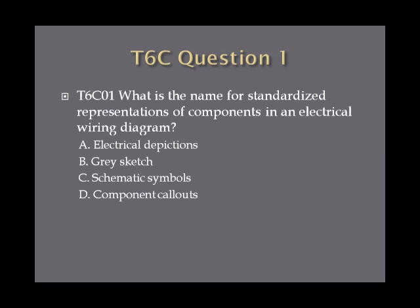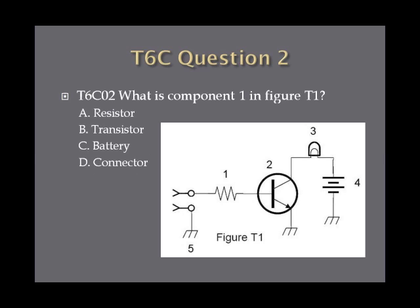Question 1: What is the name for standardized representations of components in an electrical wiring diagram? A. Electrical depictions. B. Gray sketch. C. Schematic symbols. Or D. Component call-outs. Question 2: What is component 1 in figure T1? A. Resistor. B. Transistor. C. Battery. Or D. Connector.